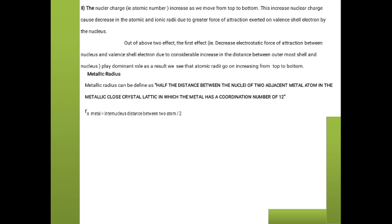Out of these two effects, the first effect — the decrease in electrostatic force of attraction between the nucleus and valence electrons due to a considerable increase in the distance between the outermost shell and the nucleus — plays the dominant role. As a result, atomic radii go on increasing from top to bottom. The first effect plays the dominant role, so our statement for groups remains: as we move from top to bottom in the periodic table, atomic radii increases.